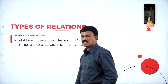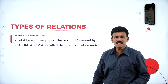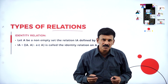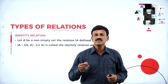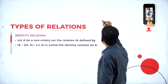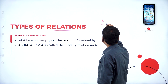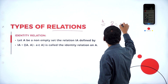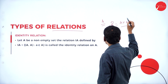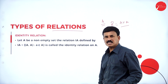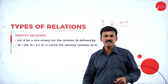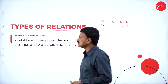First of all, what is a relation? A relation is a subset of the ordered pair. Suppose if A is a set, then the relation R is the subset of A cross A. The subset of A cross A is the relation. Now let us know regarding different types of relation.